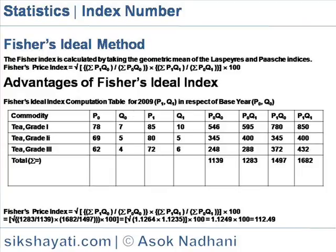The next column, P0Q0, is the product of price and quantity in the base year. The next column, P1Q0, shows the product of price in the current year and quantity in the base year. The next column, P1Q1, shows the product of price in the current year and quantity in the current year. And the next column, P0Q1, shows the product of base year price and current year quantity. The last row shows the sigma value, the total value of the respective column.